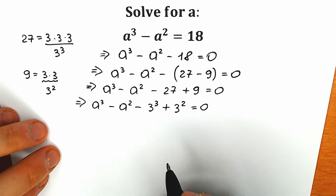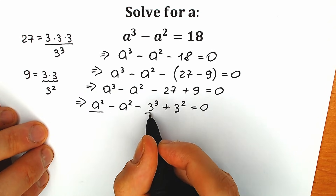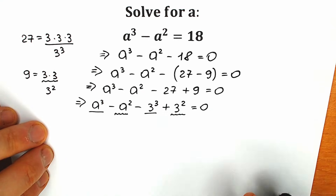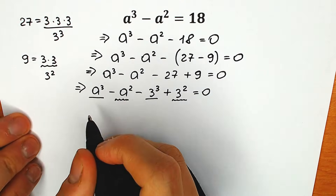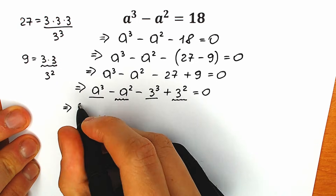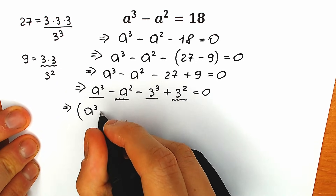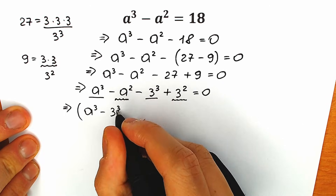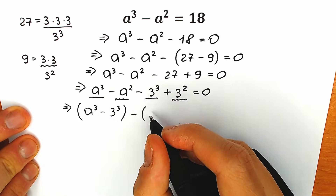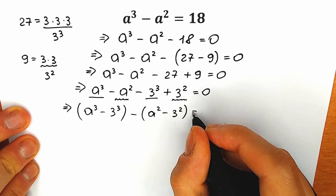Right now let's look at this from another perspective. We have a³ and 3³ — so we have cubes — and we also have a² and 3² — so we have squares. Let's group our cubes and our squares together: (a³ minus 3³) and (a² minus 3²) equal to zero.